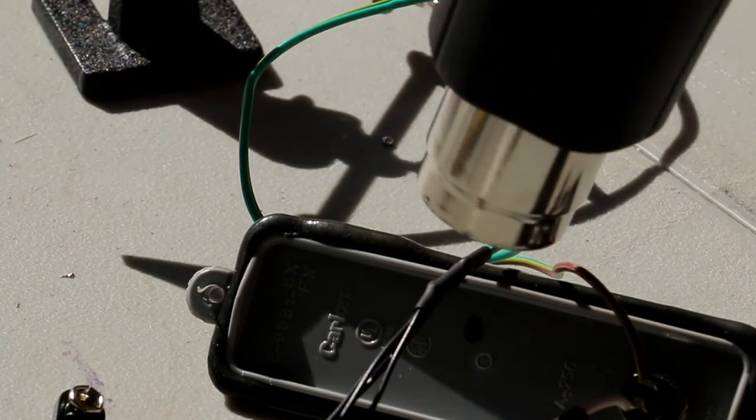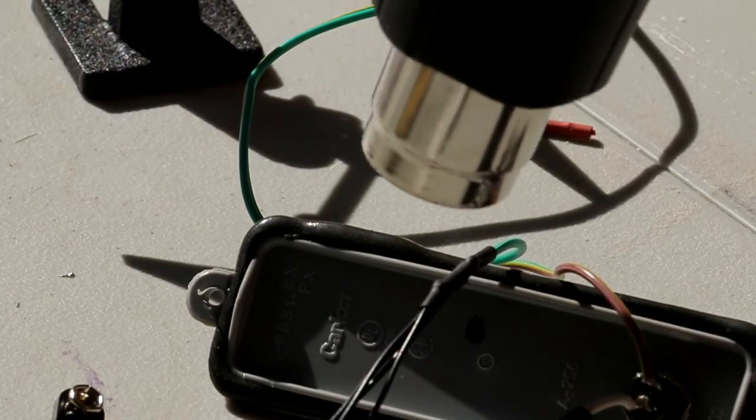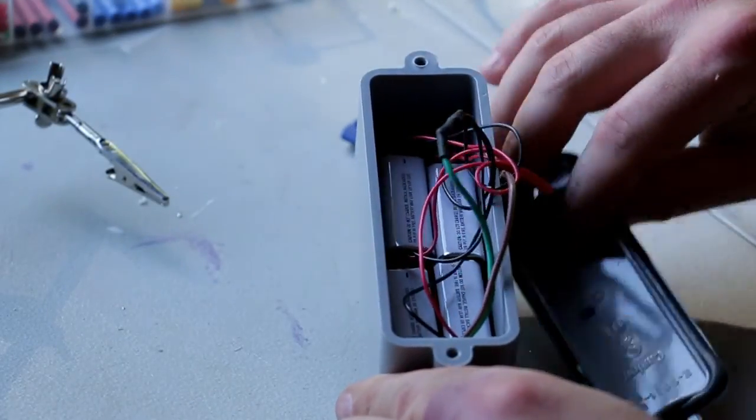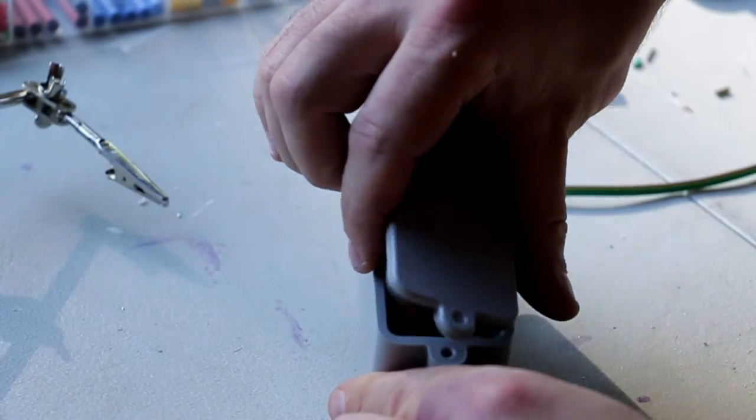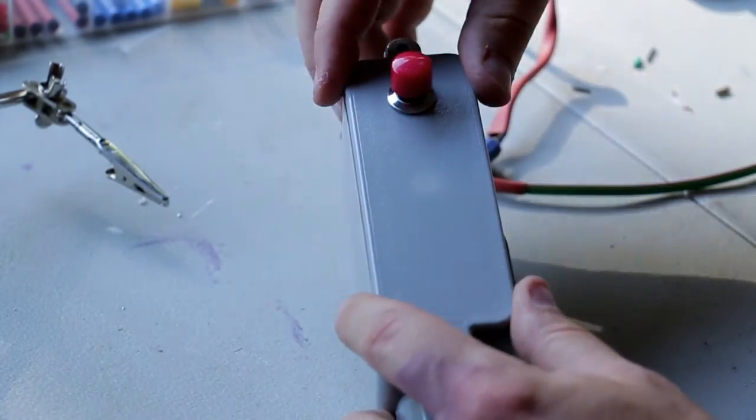Once all soldering is complete, use your heat gun on your shrink wrap. As you can see, I was able to fit four 9-volt batteries comfortably inside the case without any gaps or spacing.